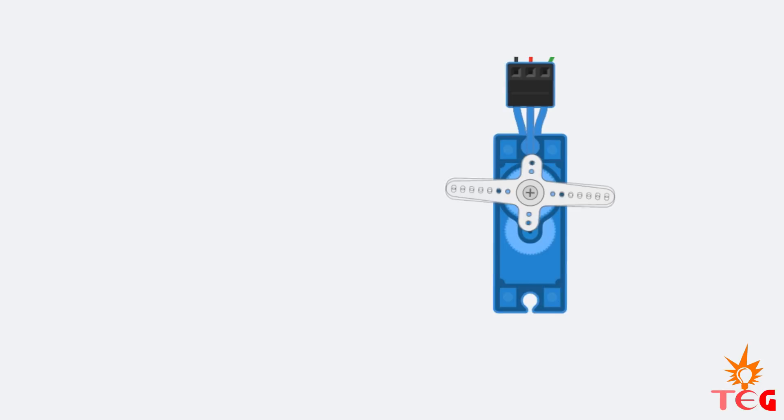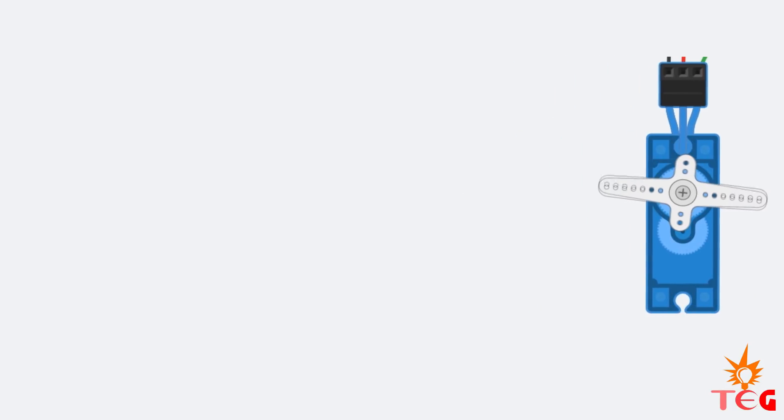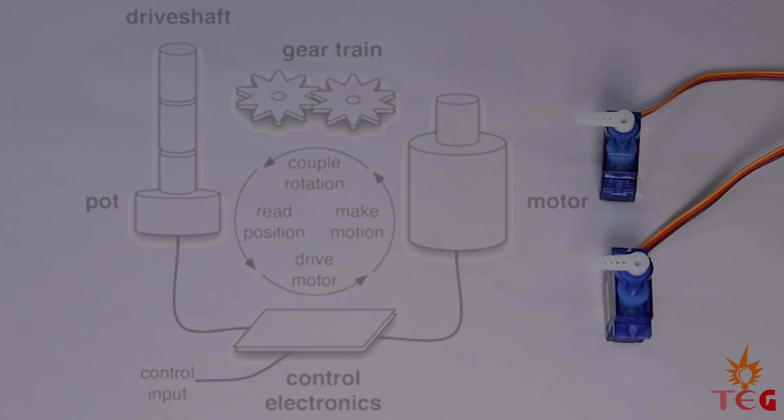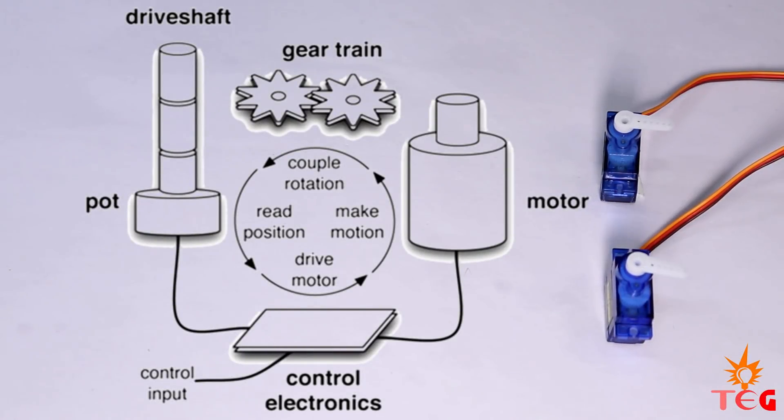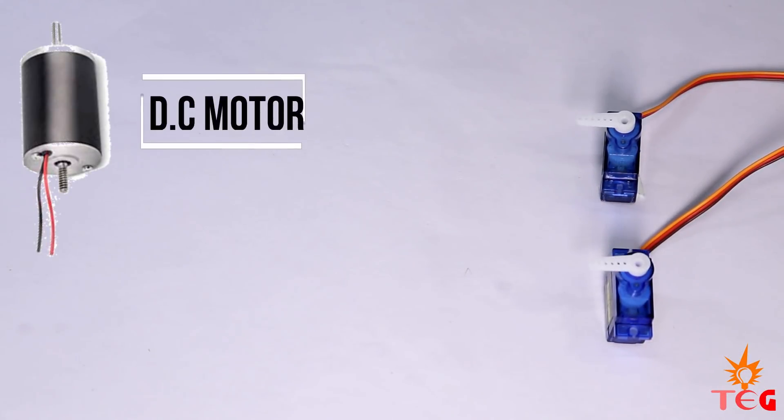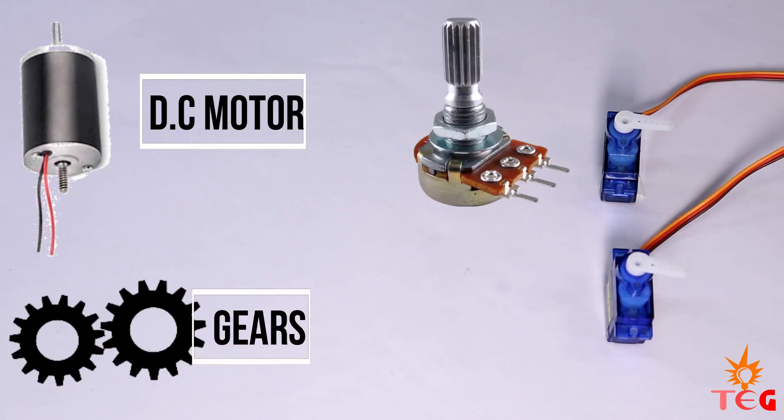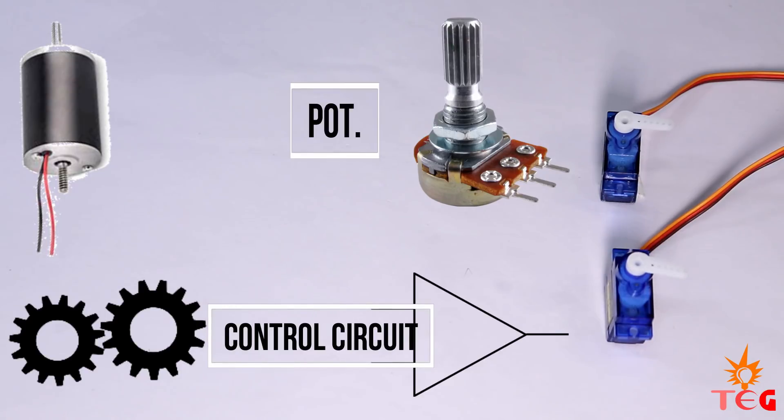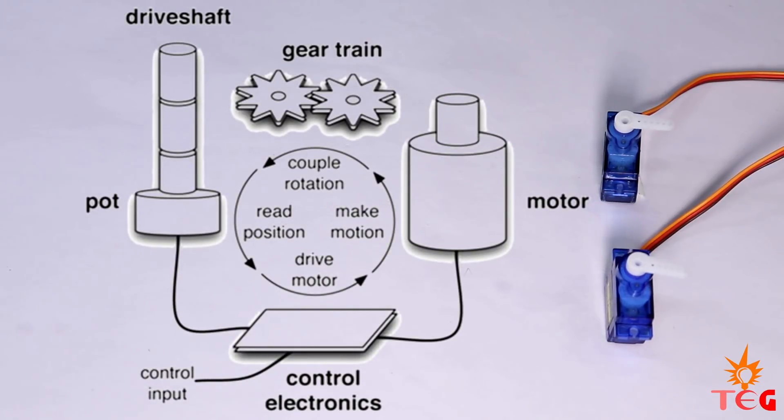First of all, what is a servo motor and why do we use them in the first place? A servo motor is basically an assembly of four things: a DC motor, some gears, potentiometer or position sensor, and control circuit. And this whole assembly gives us precise control or rotation of the shaft of the motor.